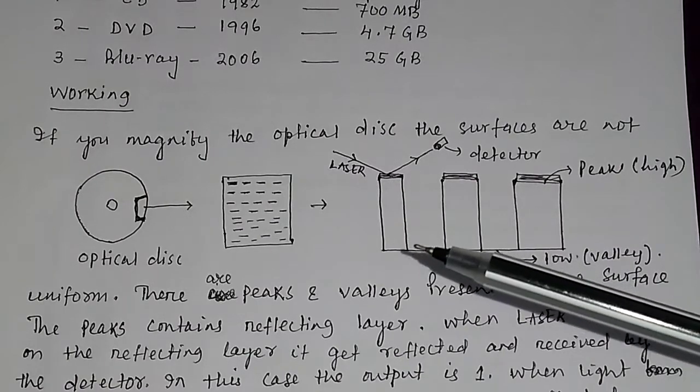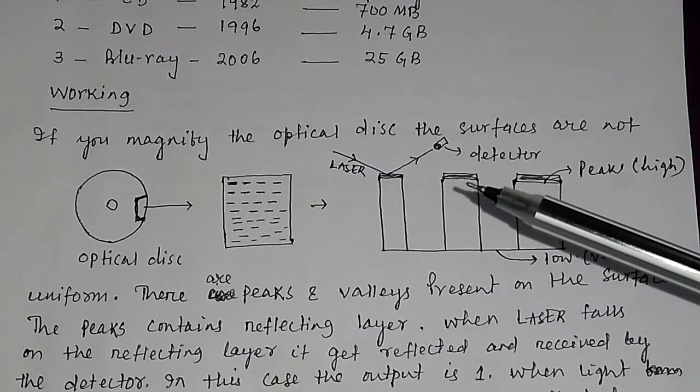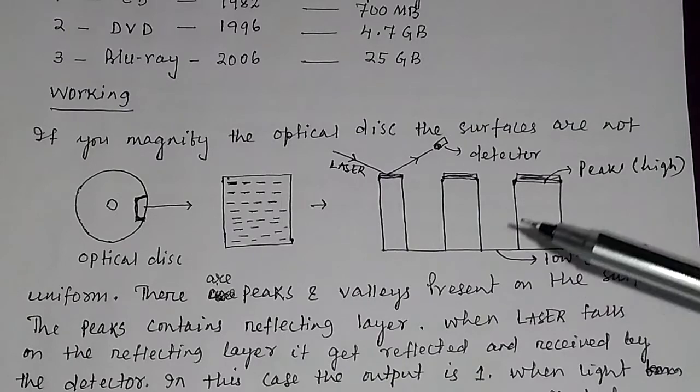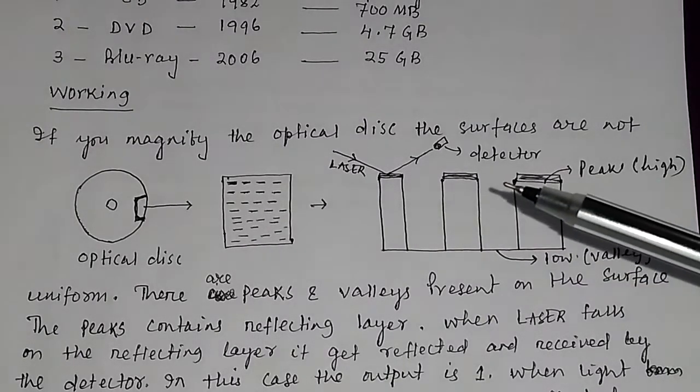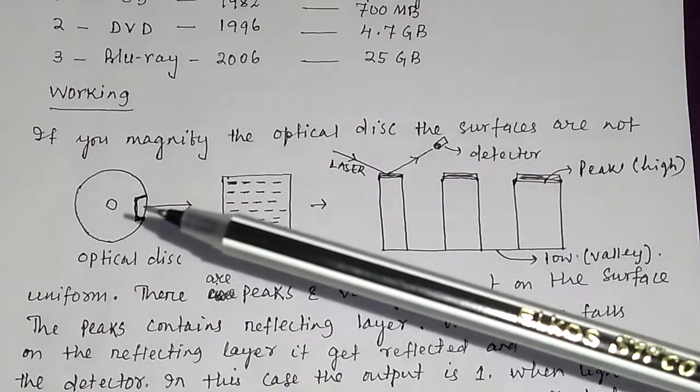This is a peak, and there is a valley. Then you have peak, then valley, then peak, valley like this. So you will find peaks and valleys on the surface of this disk.